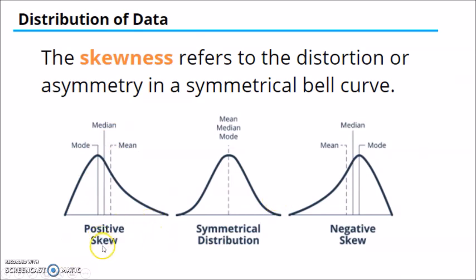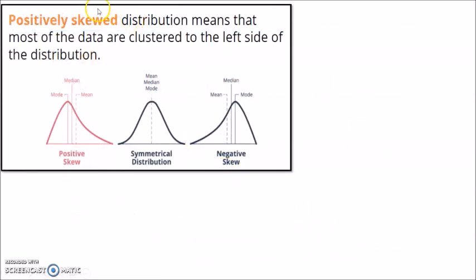So we have either positively skewed and negatively skewed data. What's the difference between the two? So if we say positively skewed distribution means that most of the data are clustered to the left side of the distribution. So positive skewness means most of the data are on the left side of the bell curve.